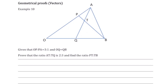This is the final video for A-level proof, and in this video we're going to look at what we call geometric proofs, or sometimes referred to as vector proofs. We're going to go through two examples — you can see this is example 10 from your booklet.